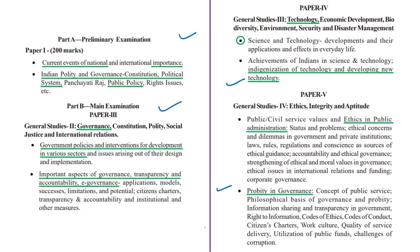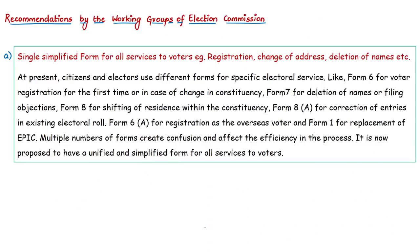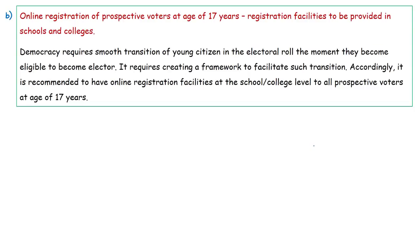One of the important recommendations is the proposal to have a unified and simplified single form for all services to voters. At present, electors use different forms for specific electoral services — for example, Form 6 for voter registration for the first time, Form 7 for deletion of names or filing objections, and likewise. This creates confusion and affects efficiency in the process. That is one of the reasons why the Election Commission of India has proposed a single simplified form for all services to voters.